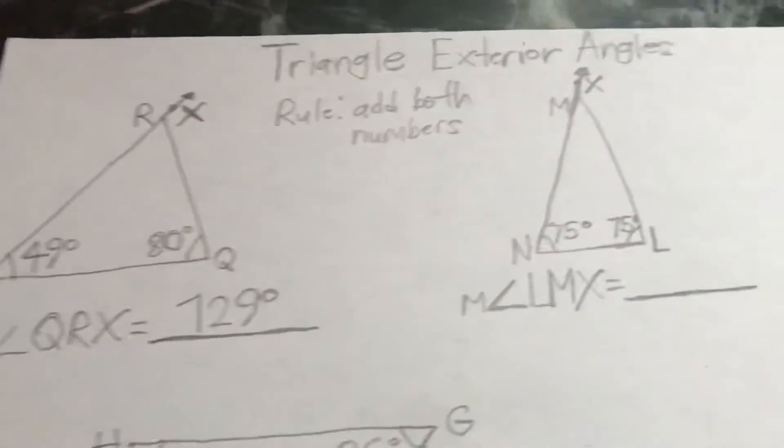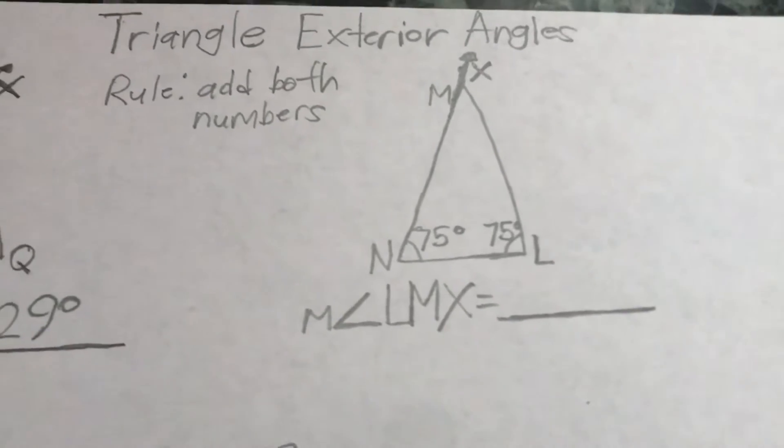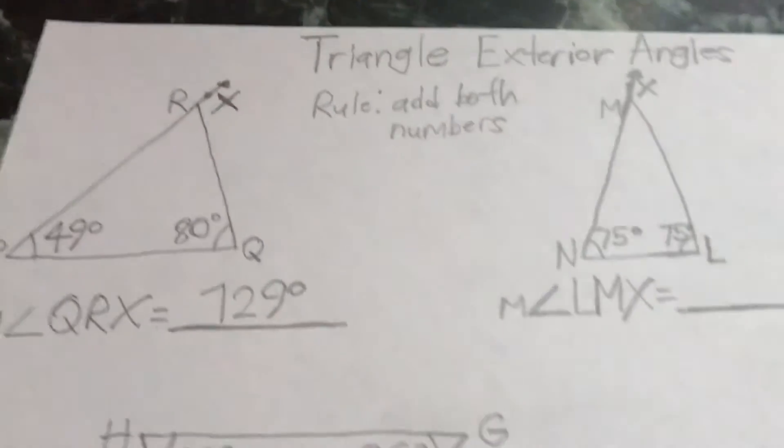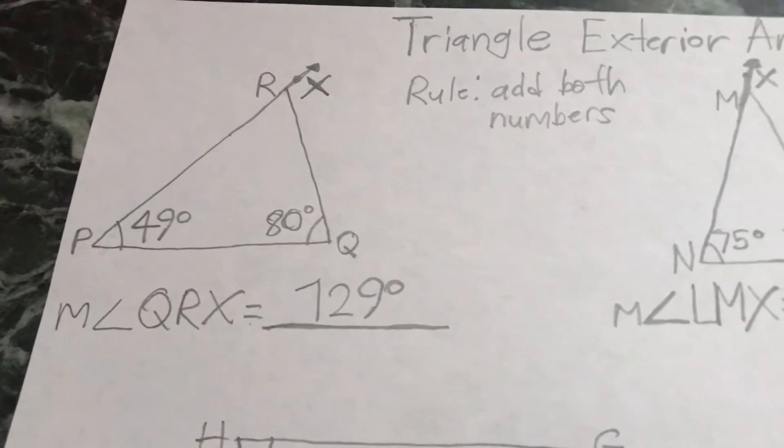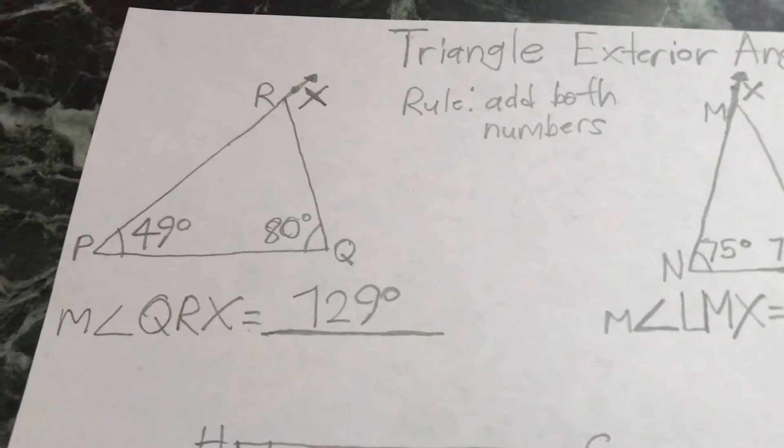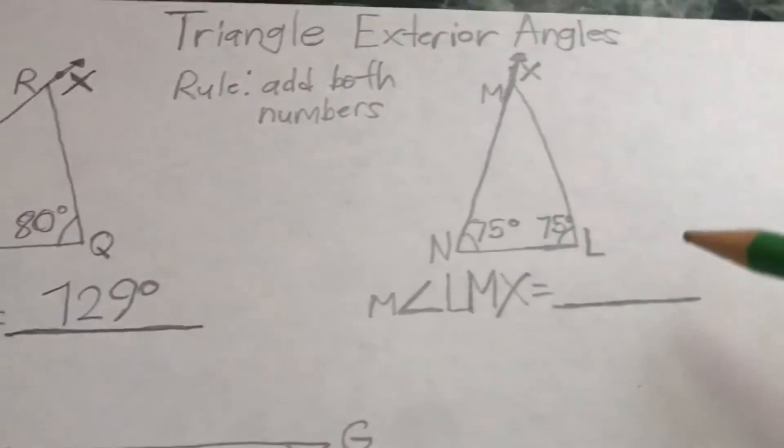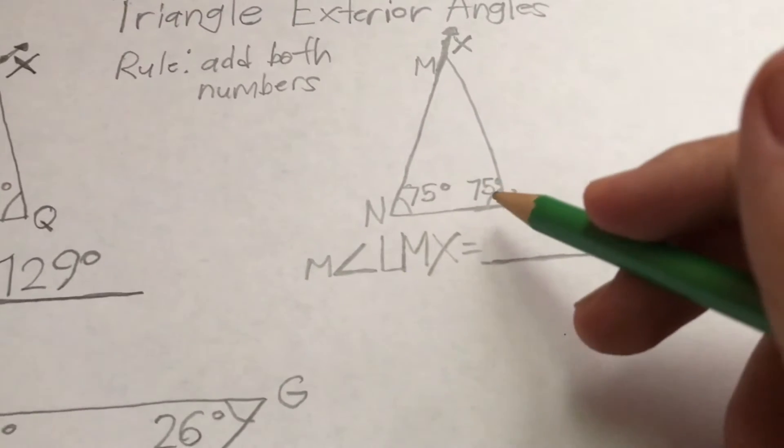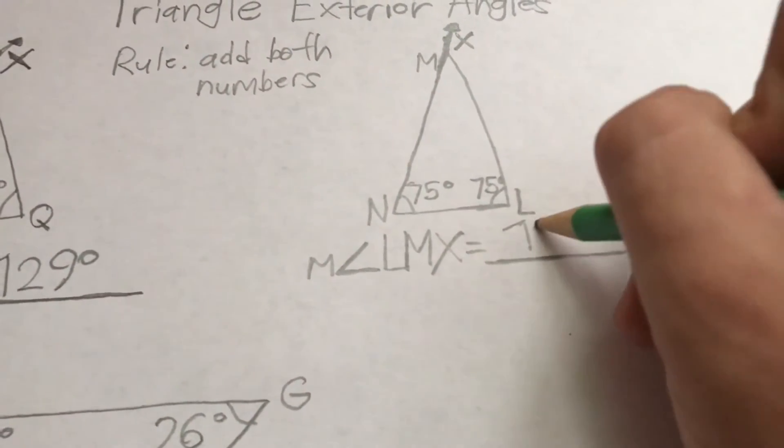So L, M, X - this is how it starts. Depending on what the position is, you start from the angles and then you get to the X. This is how it works here. So with the two numbers, 75 and 75, you add both of them. It equals 150. This is how it works here.